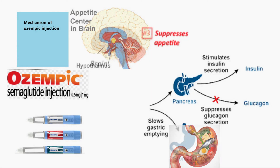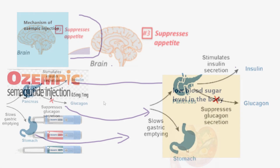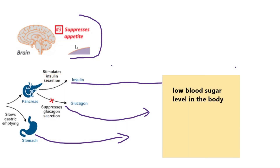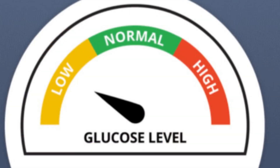It also slows down gastric emptying, thus decreasing the digestion of the meal. All of these combined effects — suppressing appetite, increasing insulin, decreasing glucagon secretion, and decreasing digestion — result in decreased blood sugar levels in the body.